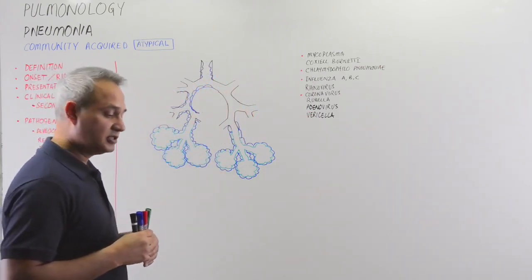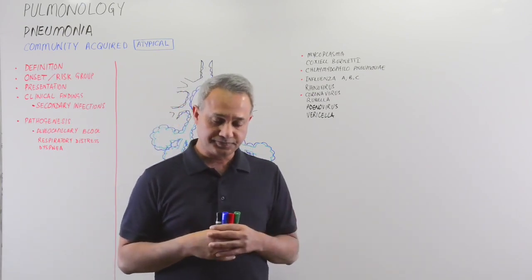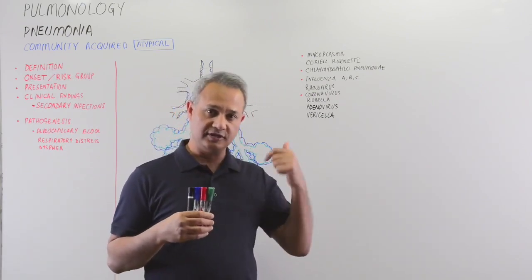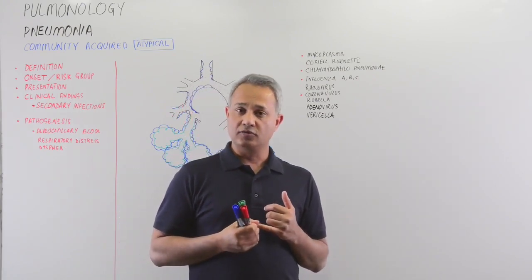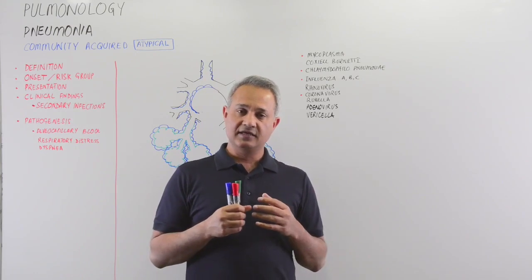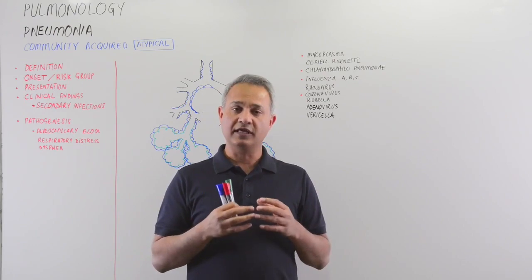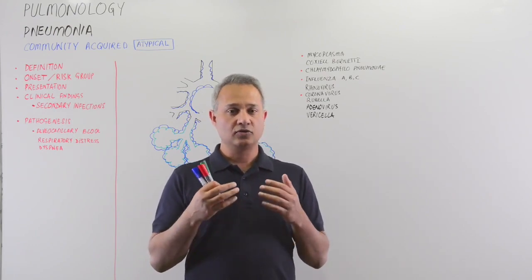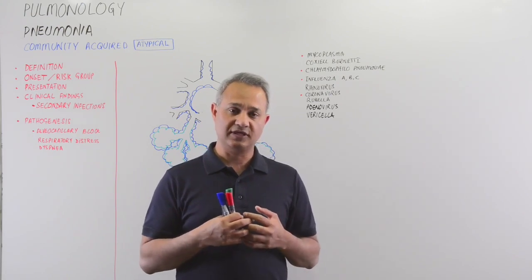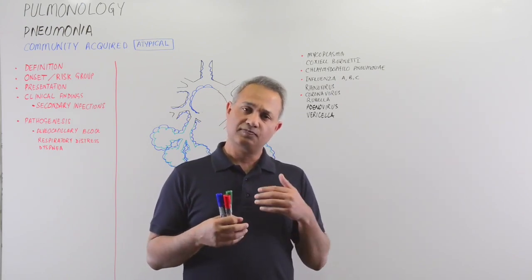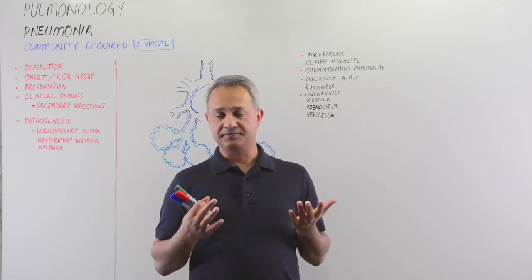First of all, let's see what is the presentation of the patient that comes to you with community acquired atypical pneumonia. Normally the patients would not even know. We'll talk about the pathogenesis. Usually the inflammation is in the parenchyma or the alveolar septa. So normally exudate is not present, respiratory distress is not present, dyspnea is not present. So patient has some dry cough and some chest discomfort and that's it.